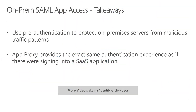Let's do a quick recap. First, even though SAML apps are configured to authenticate to Azure AD directly, it is still recommended to use pre-authentication to protect on-premises servers from malicious traffic patterns. Second, for SAML apps that follow this best practice, there are two requests at play: one is a token to App Proxy for pre-authentication, and the second is to get a SAML token for the on-premises app itself. Even though there are two requests, the user will not notice — App Proxy provides the exact same authentication experience as if the user was signing into a SaaS application.